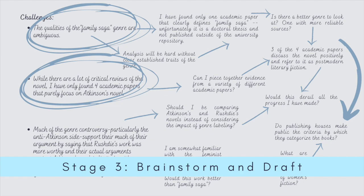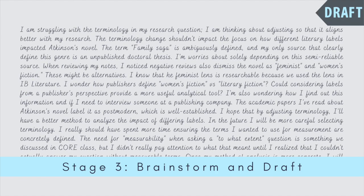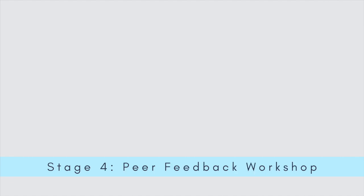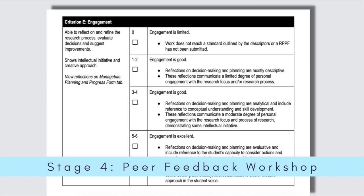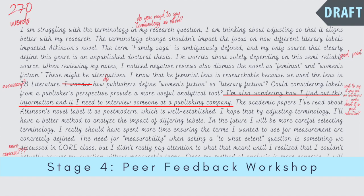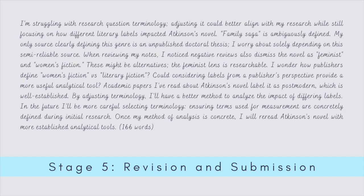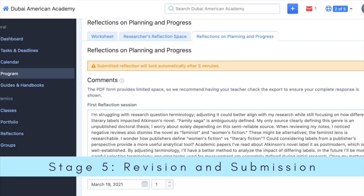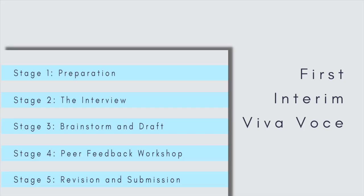They then select two or three compelling and insightful challenges and use these to draft a reflection. Students bring those reflection drafts to core class, where we conduct a peer editing workshop. The workshop begins by reviewing the assessment criteria, and then students calibrate their understanding by investigating exemplars, examiner comments, and scores. Once calibrated, students give and receive critical peer feedback, then use that feedback to revise their reflection drafts, keeping in mind that each reflection should be around 166 words. Students are expected to complete the revision and post it to ManageBac before the next core class. This guided process is repeated for every strategic reflection time.